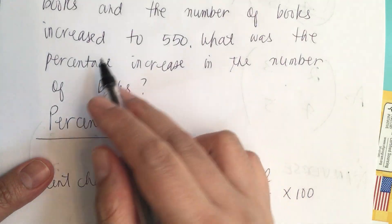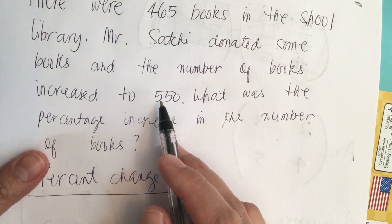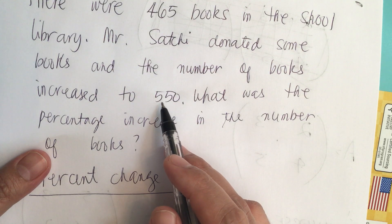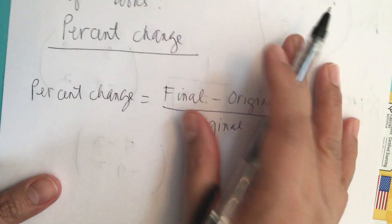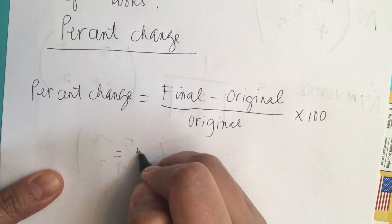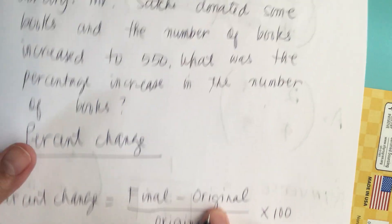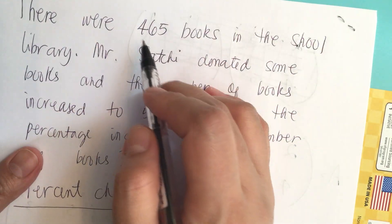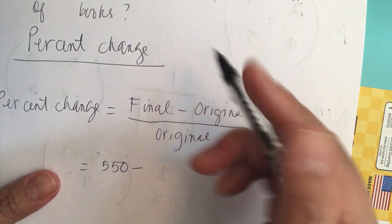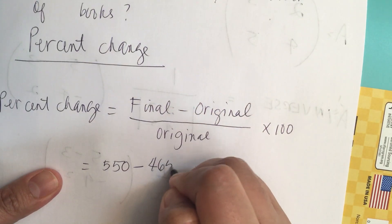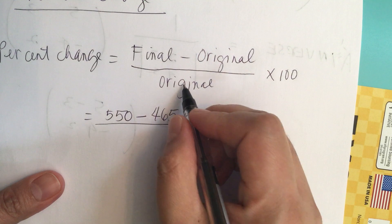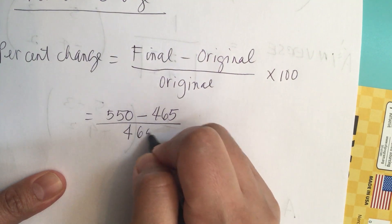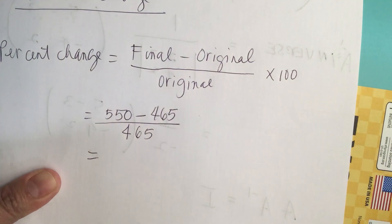The final or the new number of books is 550, and then we subtract the original number of books, 465, and then we divide it by the original which is 465.